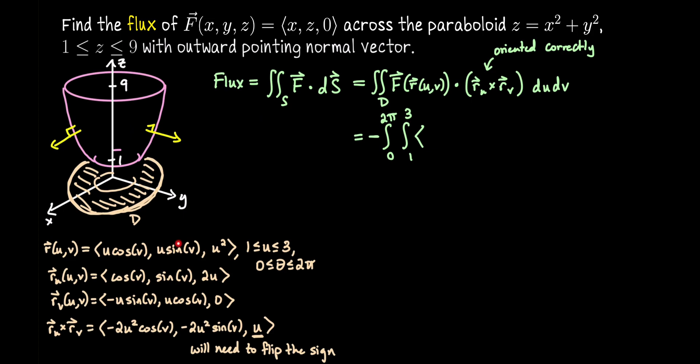F(r(u,v)) means take these coordinates, treat the first one as x, the second one as y, and the third one as z, plug them into our vector field. So the vector field is going to return the first coordinate. So that will be u cosine v. Then it returns the third coordinate. So that will be u². And then 0. Dot our cross product. So negative 2u² cosine v, negative 2u² sine v, u du dv. Okay, I think I've squeezed it all on the screen.